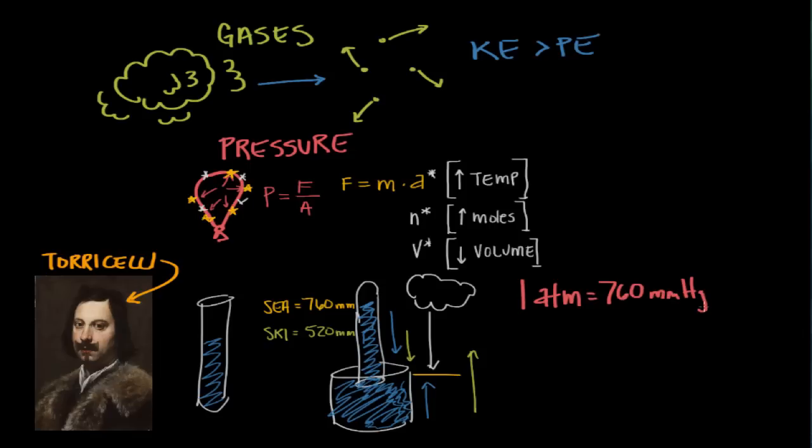And in honor of Torricelli, this millimeters of mercury unit is often called a Torr. So one atmosphere equals 760 millimeters of mercury, which equals 760 Torr.